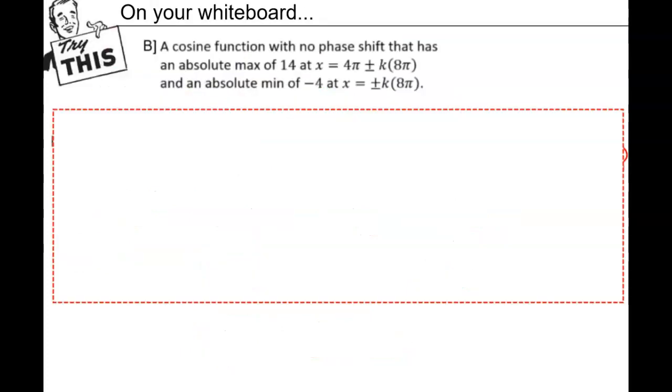Now in problem B, pause the video and try this on your whiteboard. Write the equation for a cosine function with no phase shift that has an absolute max of 14 at x = 4π ± k(8π) and an absolute min of -4 at x = ±k(8π).